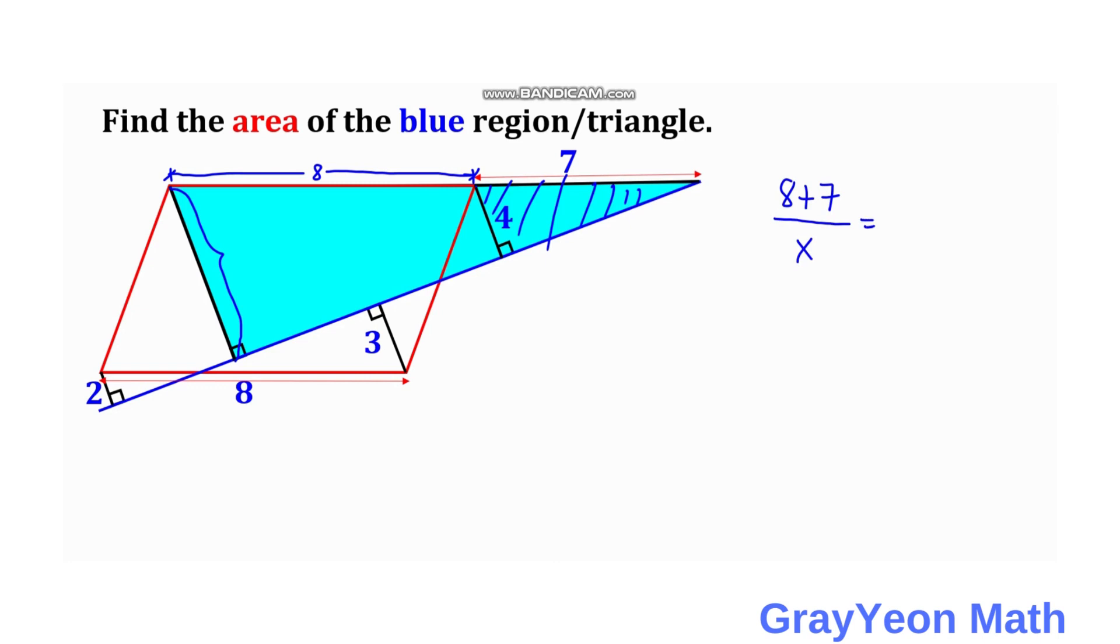And the smaller right triangle, 7 over 4. So we have 15 over x is equal to 7 over 4. So we have x is equal to 15 times 4 over 7. So we have x is equal to 60 over 7 units.